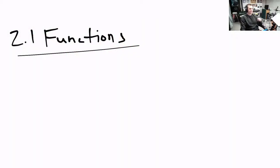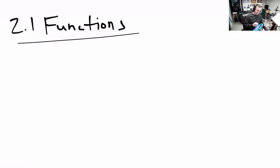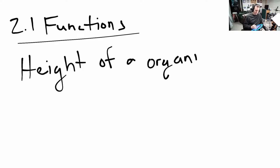2.1, functions. Functions really are all over the place. You recognize them at an instinctive level. There are lots of things that you know are functions, such as your height. The height of an organism is a function of its age.